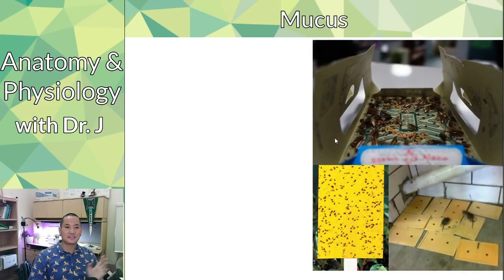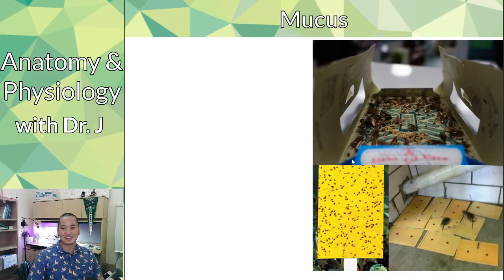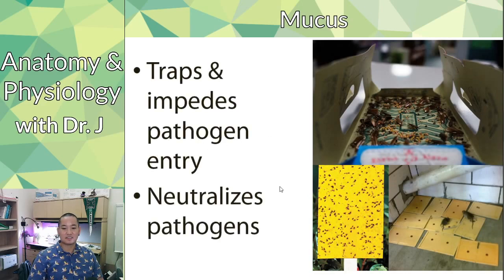Mucus works like a sticky trap in terms of immune defense. We touched on goblet cells and cilia in the respiratory system that move mucus up and out of the body. In terms of immune defenses, mucus traps pathogens, dust particles, and other things that can cause disease. It can also neutralize pathogens. So mucus is more than something we blow into a Kleenex — it's an important defense for the linings of your body.